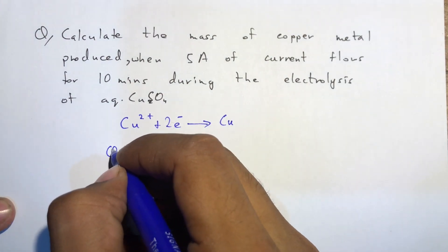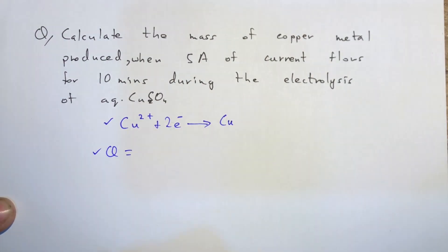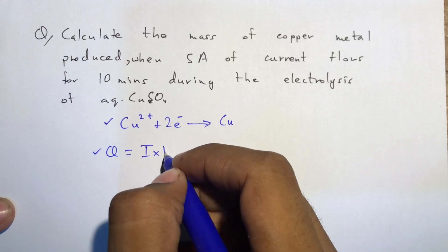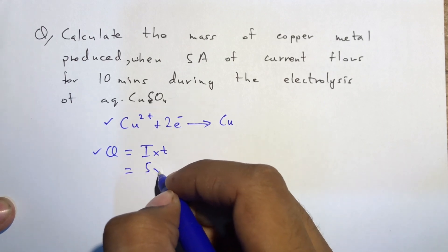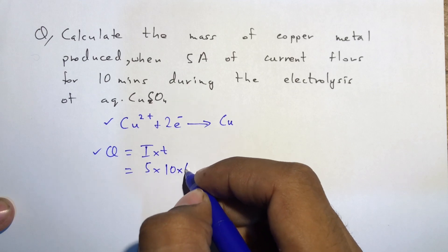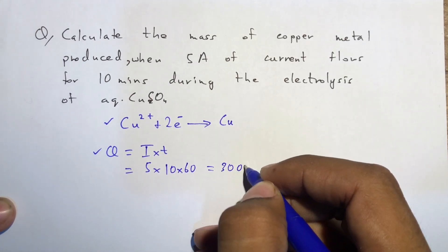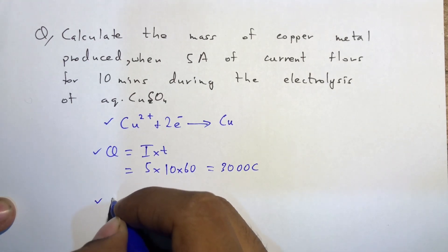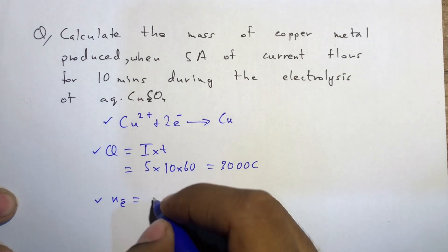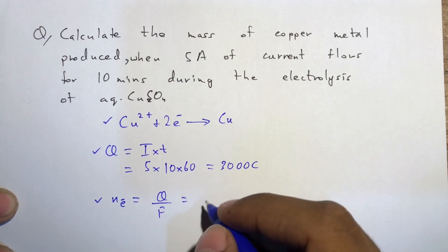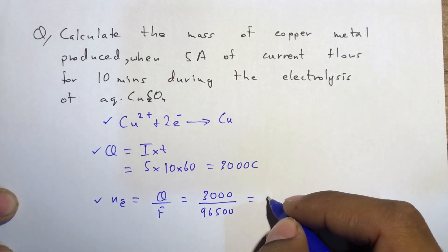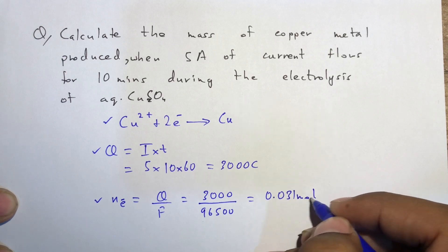First, find the charge that passed through the electrolyte using Q = It. I is 5 amperes, t is 10 minutes converted to seconds by multiplying by 60, giving 600 seconds. So Q = 5 × 600 = 3,000 coulombs. Then moles of electrons = Q/F = 3,000 / 96,500 = 0.031 moles of electrons.